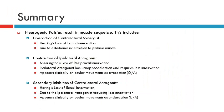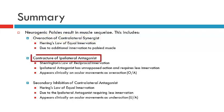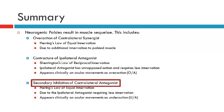In summary, when we have a neurogenic palsy, a muscle will be underacting due to its impaired function, and what will follow is the muscle sequelae, which consists of: one, the overaction of the contralateral synergist; two, contracture of the ipsilateral antagonist; and three, secondary inhibition of the contralateral antagonist. That brings us to the conclusion of this video on muscle sequelae. Thank you.